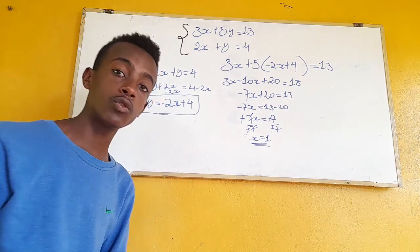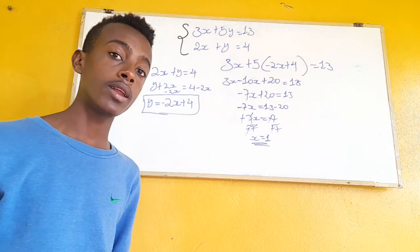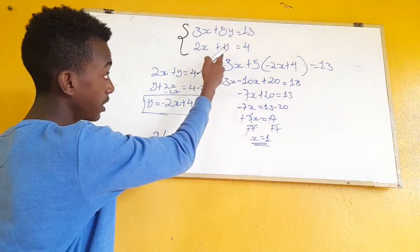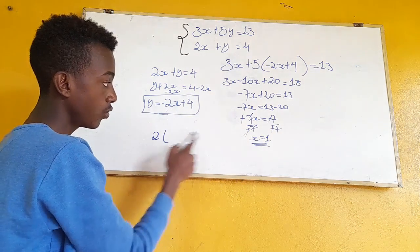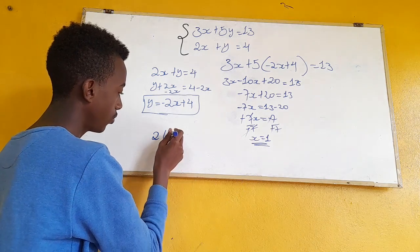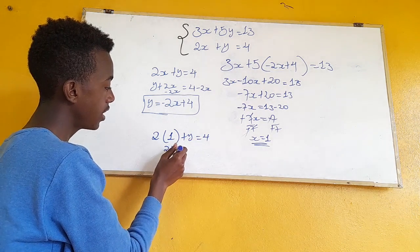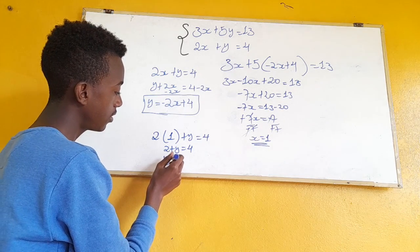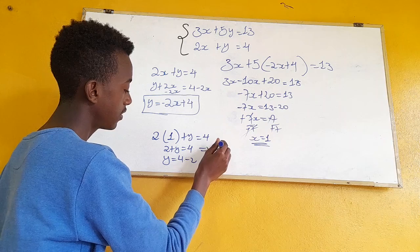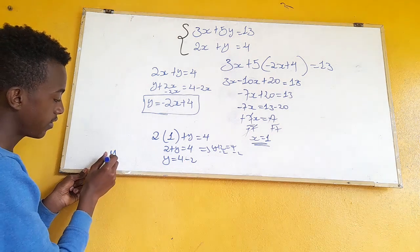x is equal to 1. Now substituting the value of x: 2 into 1 plus y equals 4, so 2 plus y is equal to 4, therefore y is equal to 4 minus 2.